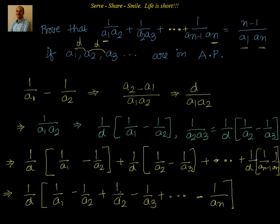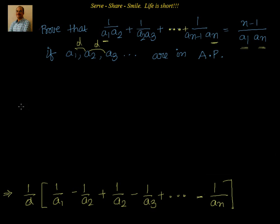Now, when we simplify this, what will happen? Our next step will be, we can see very clearly that all the terms will cancel other than the first and last. So, can I write 1 by d into 1 by a1 minus 1 by an?